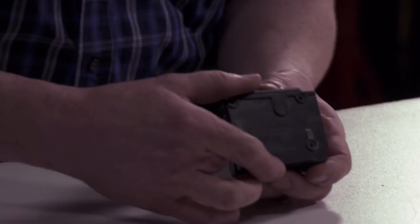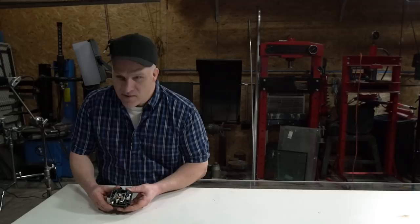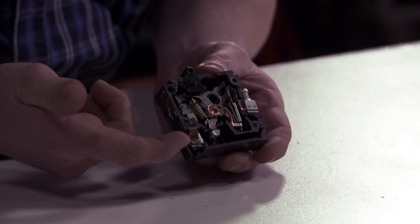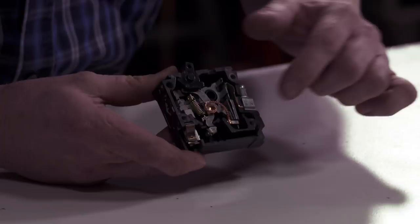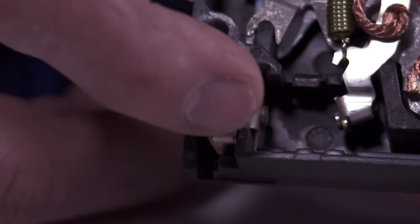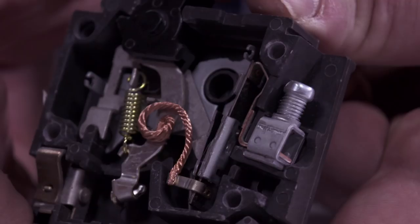So this is what a circuit breaker looks like inside. The power comes in here, goes out here, and everything in between, this whole mechanism, is the actual circuit breaker. These are the contacts down here and as you can see they're open.